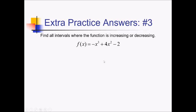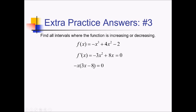On this one, we're trying to figure out where this polynomial is increasing and decreasing. I'm going to start by doing some sign analysis after finding critical values. For my derivative, I've got negative 3x squared plus 8x. Setting that equal to 0 and finding critical values — I can factor a negative x out of this, leaving me with 3x minus 8. My critical values are going to be 0 and, adding 8 and dividing by 3, 8 thirds. Let me put those on an f prime number line.